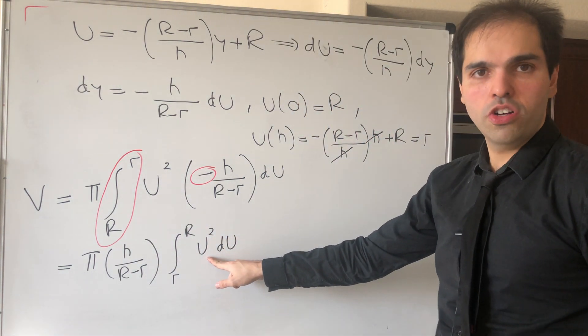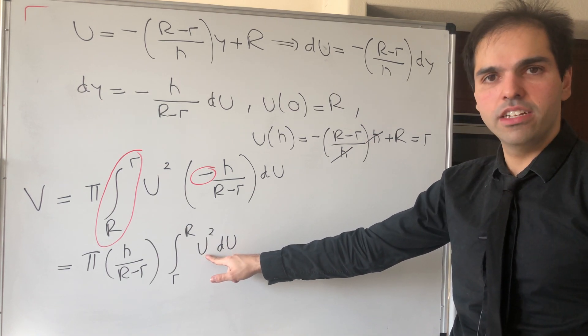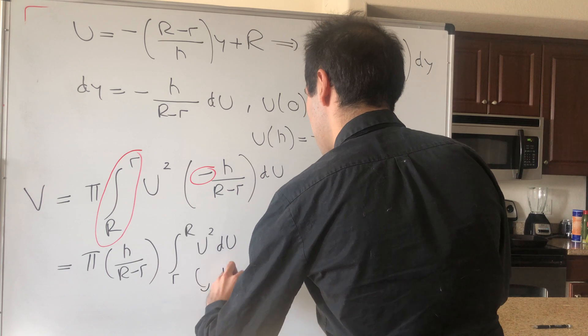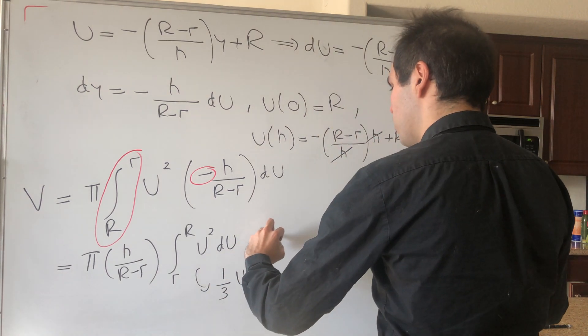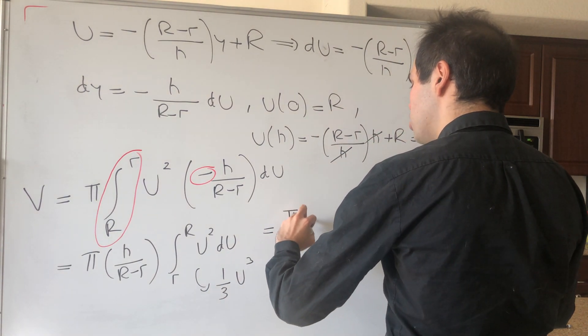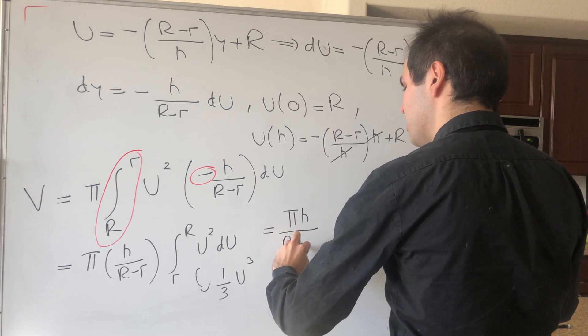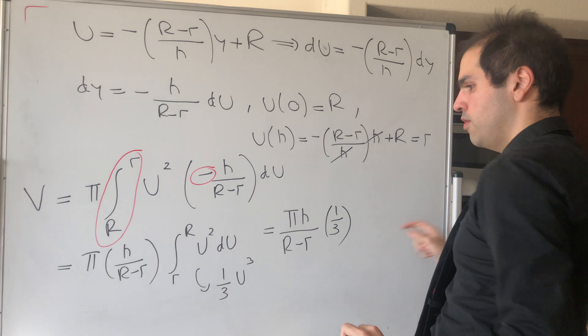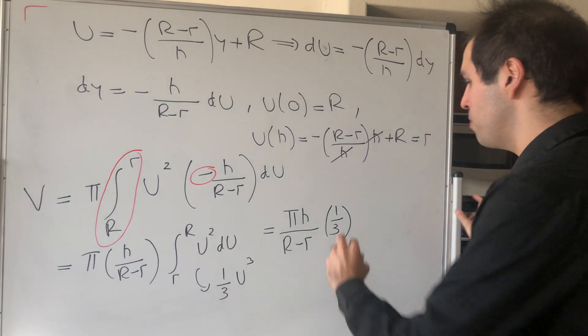But this one is not hard to calculate, because an antiderivative is one-third u cubed. So what this becomes, it's pi h over (R minus r), and then one-third, and then u cubed, so R cubed minus r cubed.